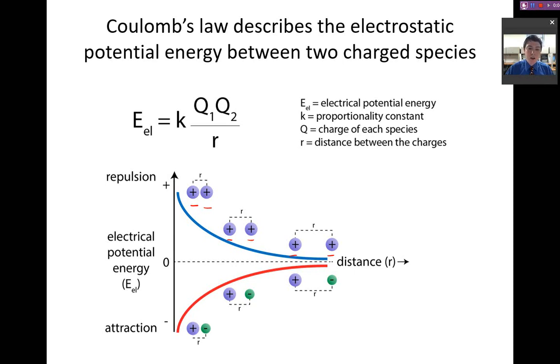And so, we can talk about charged species that are attractive as having a low electric potential energy. Notice that this is negative, whereas repulsive interactions are going to have a high electric potential energy, and that will be positive.